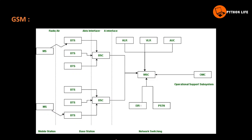This is the GSM architecture. The Mobile Station (MS) connects to BTS (Base Transceiver System), which is part of BSS along with BSC. This forms the Network Switching Subsystem. OSS - the Operational Subsystem - includes the OMC (Operational Maintenance Center), and MSC and BSC handle control and management.